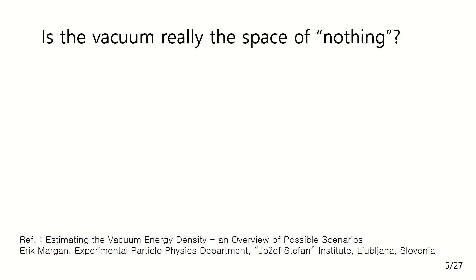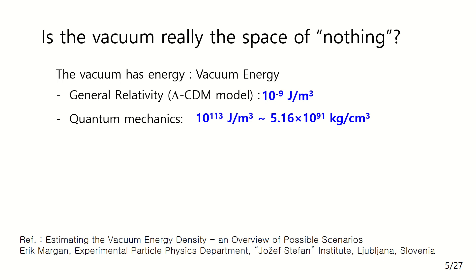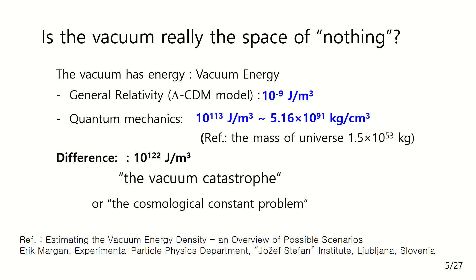So is the vacuum really a space of nothing? Modern physics says there is energy in the vacuum. The magnitude of vacuum energy is provided by two theories. The standard model of cosmology based on general relativity predicts its magnitude as 10 to the power of minus 9 joule per cubic meter. On the other hand, quantum mechanics predicts its value as 10 to the power of 113 joule per cubic meter. There is a huge difference between the two predictions. This is why it is called vacuum catastrophe, also known as the cosmological constant problem.